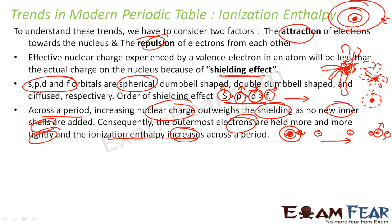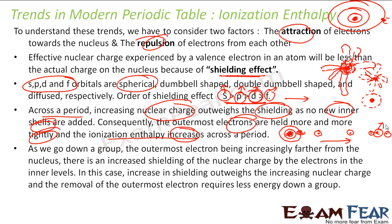And the moment we reach the noble gas, it is fully satisfied — it will not even let you take out an electron; it will be all the more difficult. So atomic size is not the only parameter — there are other parameters also which we will discuss. As we go down the group, the size increases.